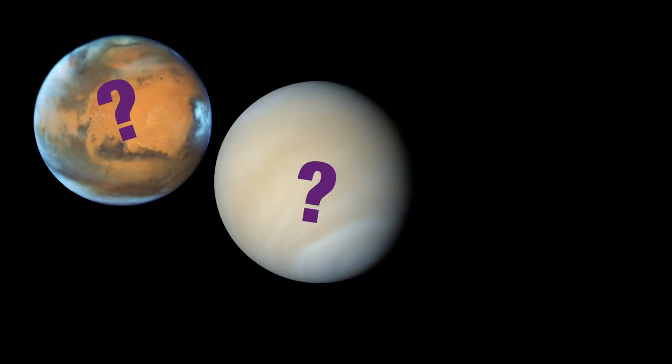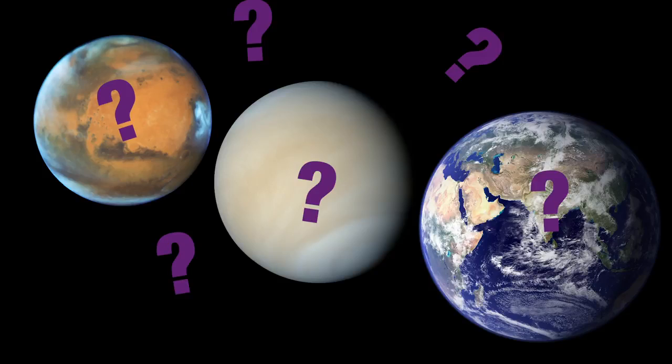The TRAPPIST-1 planets could have compact atmospheres similar to Mars, Venus, Earth, or something entirely different.